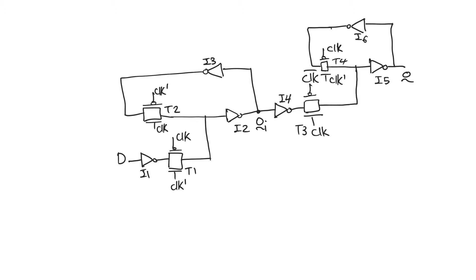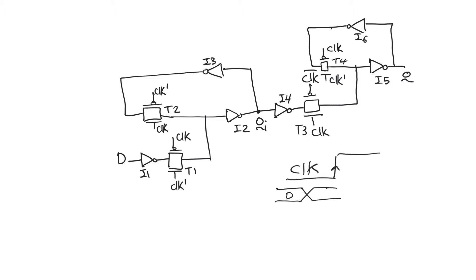If you look at the active edge of the clock, as soon as the clock goes up to 1, transmission gate T1 becomes off. Transmission gate T1 creates an open circuit and detaches the input D from the rest of the register. Looking at this diagram, we can say that hold time is equal to zero. We do not actually need to hold the data any time after the active edge of the clock. We can immediately change it because as soon as transmission gate T1 is cut off, D does not need to be held anyway.